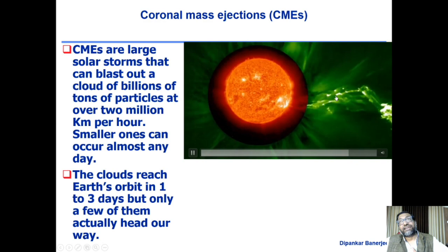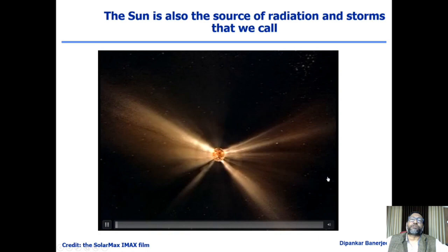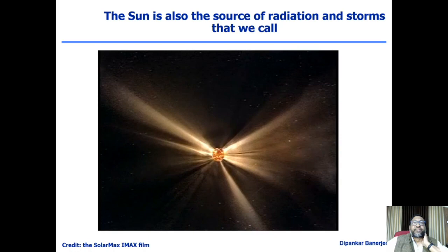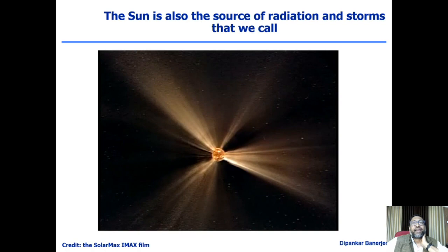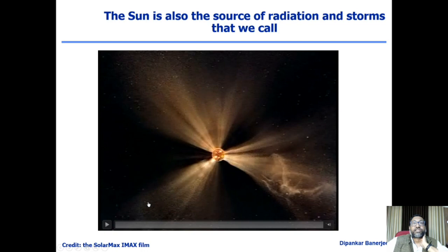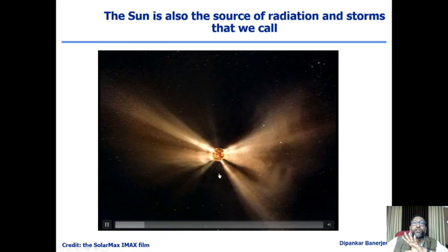The sun is a source of radiation and storms that we call space weather. This movie from the twin satellite STEREO shows that when there is an explosion on the sun, a huge amount of material is thrown into the interplanetary space.